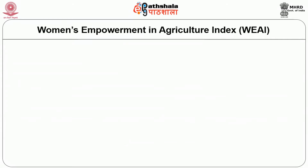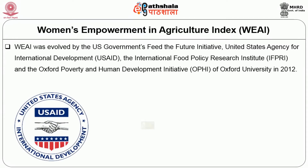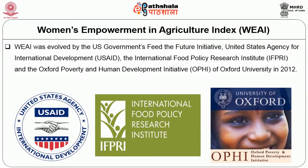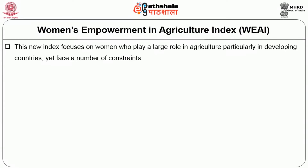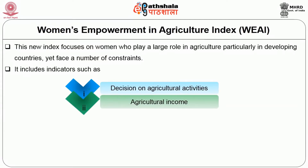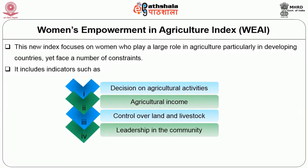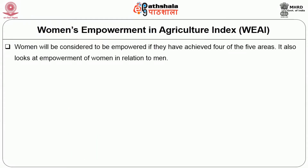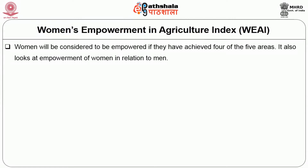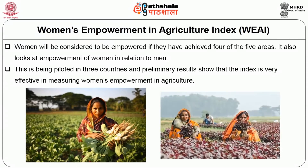The Women's Empowerment in Agriculture Index, WEAI, was evolved by USAID, the International Food Policy Research Institute IFPRI, and the Oxford Poverty and Human Development Initiative of Oxford University in 2012. This index focuses on women who play a large role in agriculture, particularly in developing countries, yet face a number of constraints. It includes indicators such as decisions on agricultural activities, agricultural income, control over land and livestock, and leadership in community and time use. Women are considered empowered if they have achieved four of the five areas. It also looks at empowerment of women in relation to men.